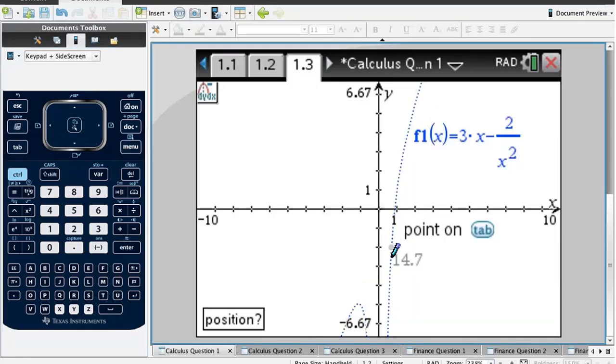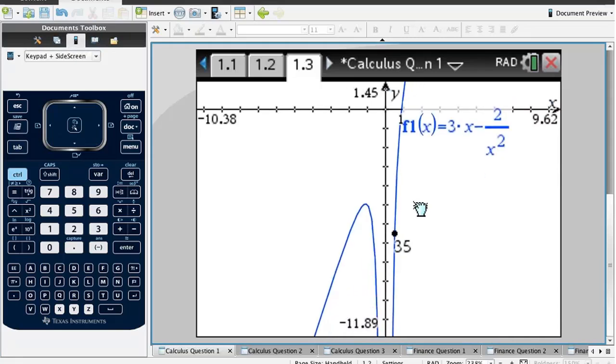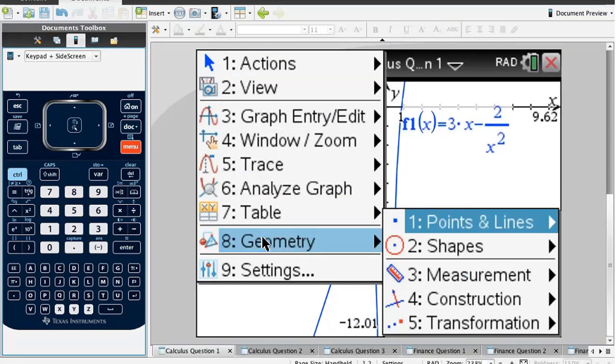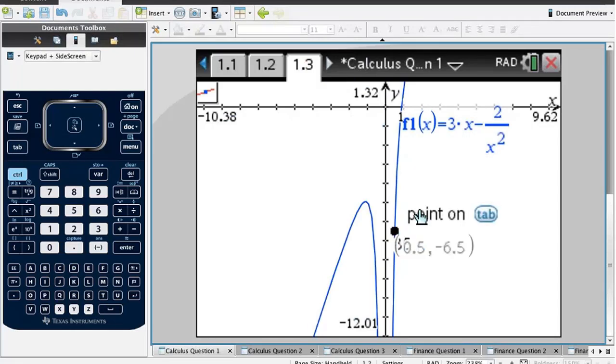At the moment that gradient is 16.5, that's not what I want. I want 35, so I'm going to drag it down. And look at that, we get 35. If for some reason you don't quite get exactly 35, you can always zoom in around your point. Now that I've gotten 35, the gradient that I want, I still need to find the coordinates of the point. So I press menu, geometry, points and lines, and then point on. And here's my actual point: 0.5, negative 6.5.